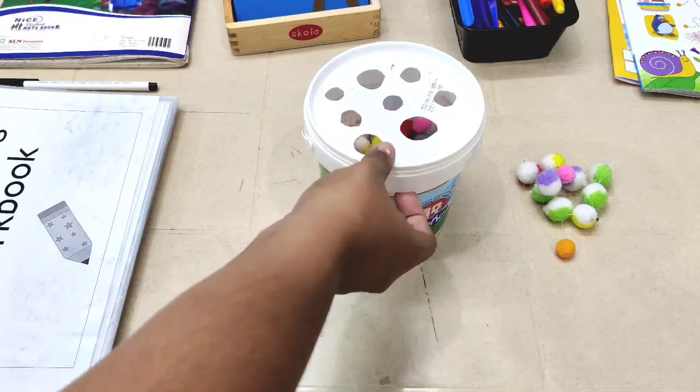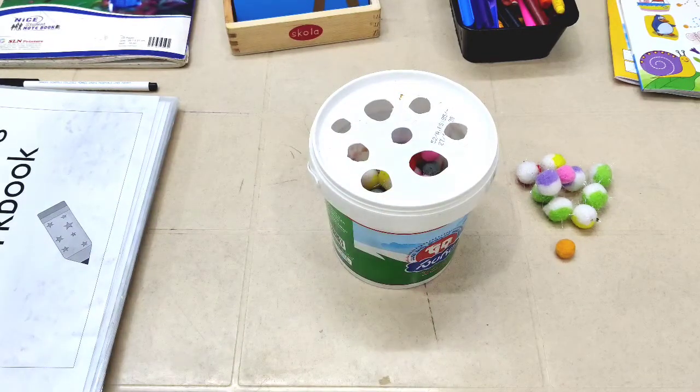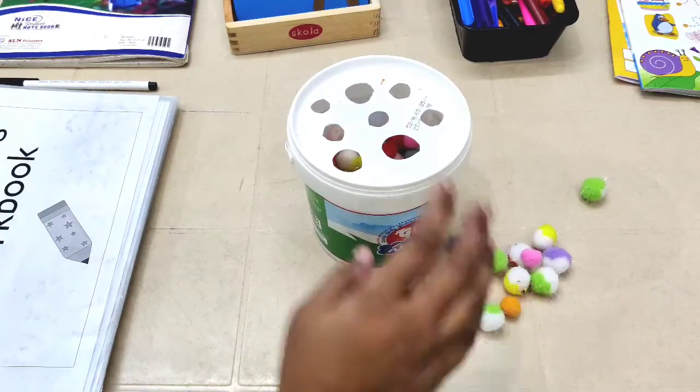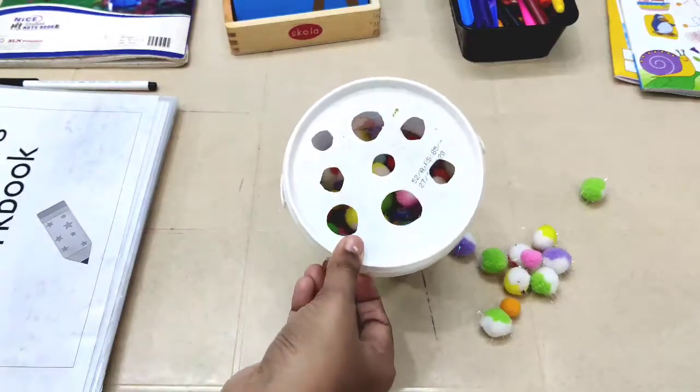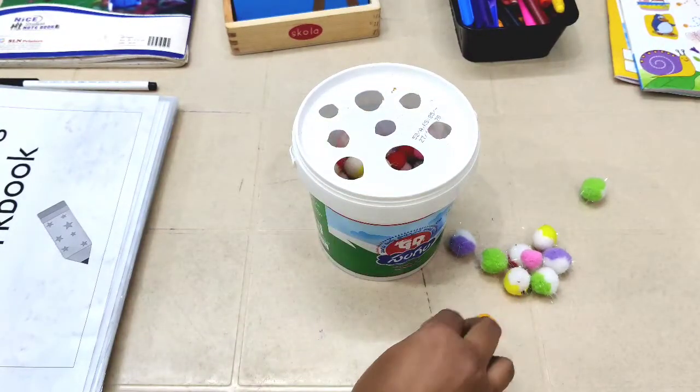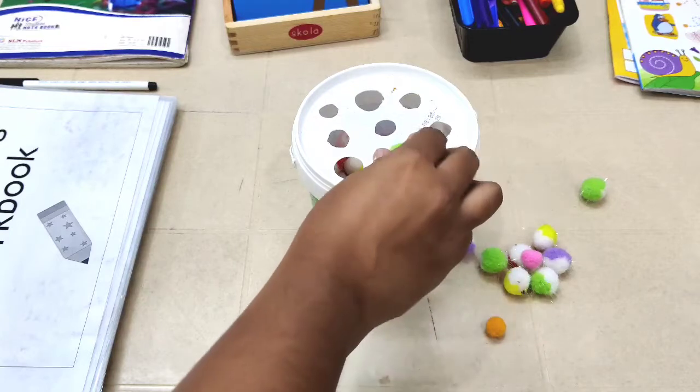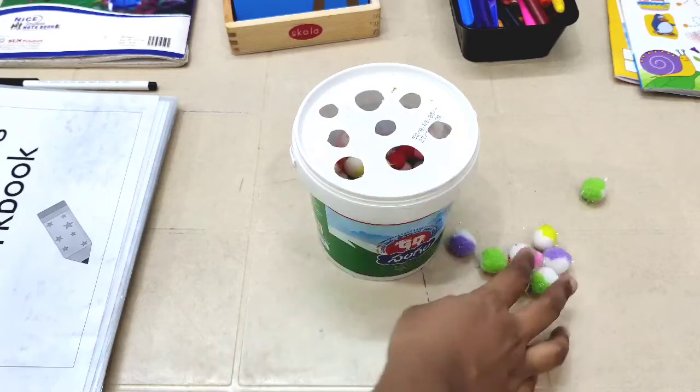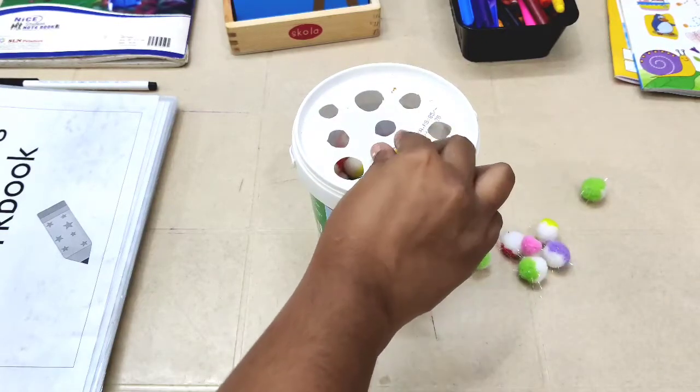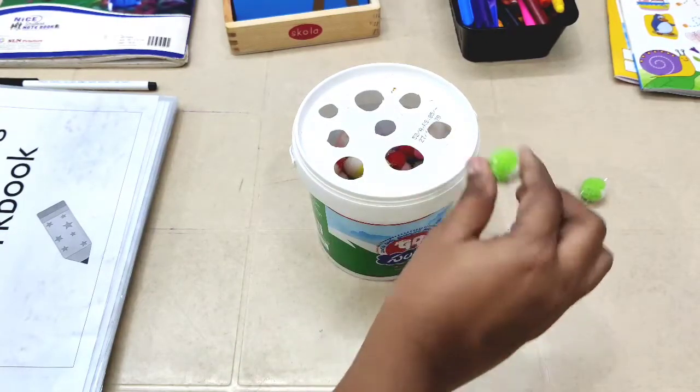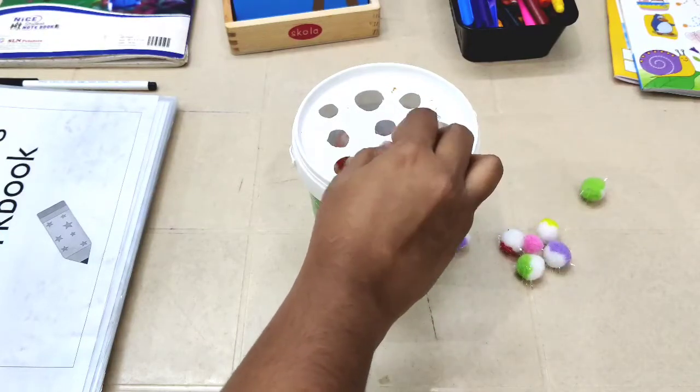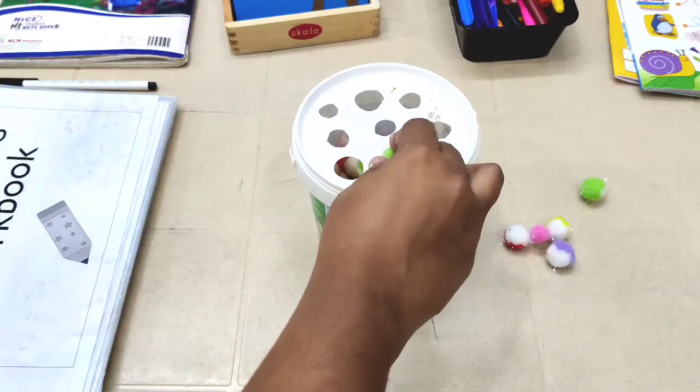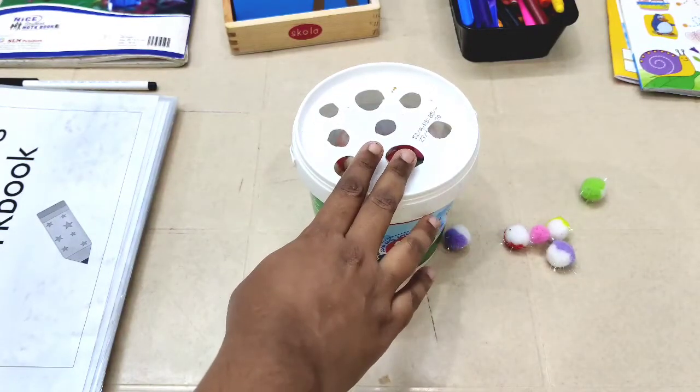I'm going to show one activity, a pom-pom drop. I bought some pom-poms and you can create your own container like this. This is a great way to practice their fine motor skills, just putting these pom-poms through the container as they use the pencil grip. This is also good for hand-eye coordination. I have linked a video in the description box where you can find pre-writing activities like these.